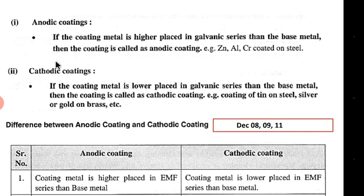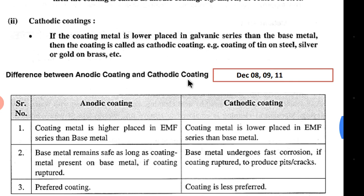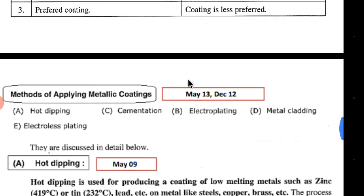Cathodic coating is the reverse of anodic coating. Here the base metal acts as the anode and the coating metal acts as the cathode — meaning the coating metal is placed lower in the galvanic series. Examples of cathodic coatings include tin on steel, silver on gold, or gold on brass.